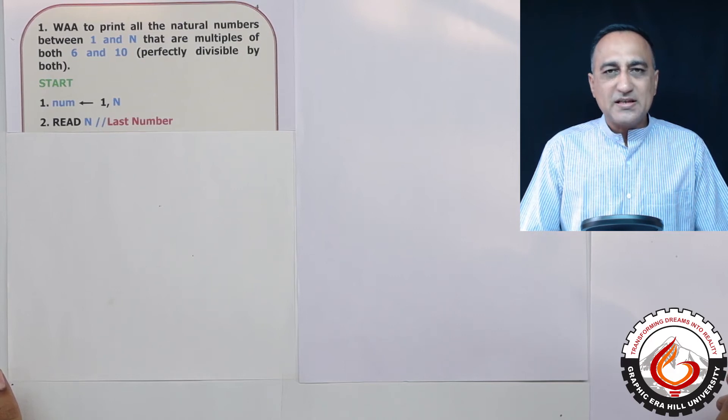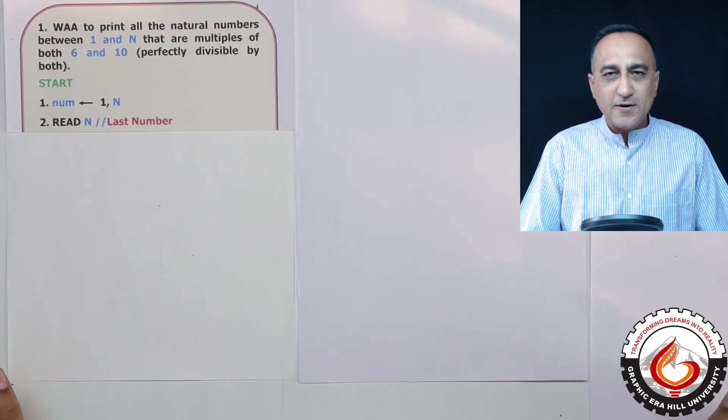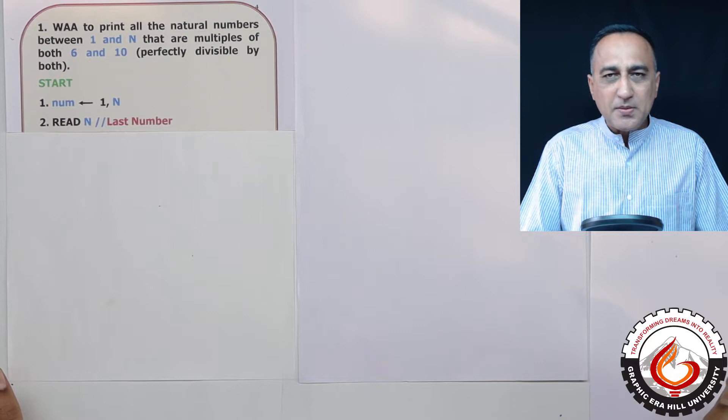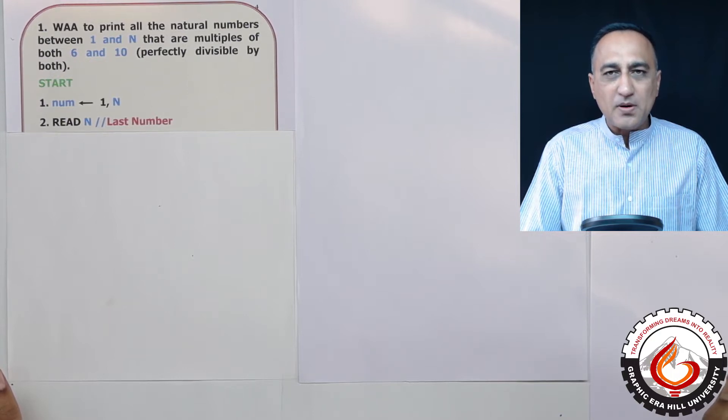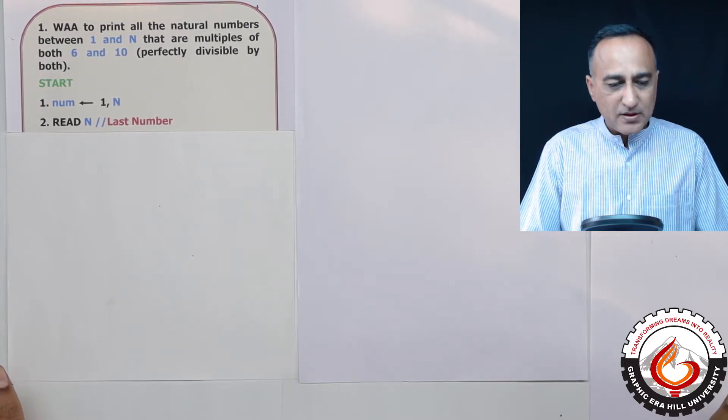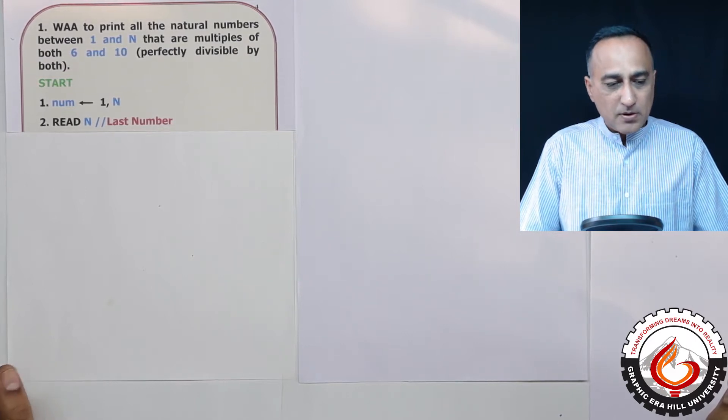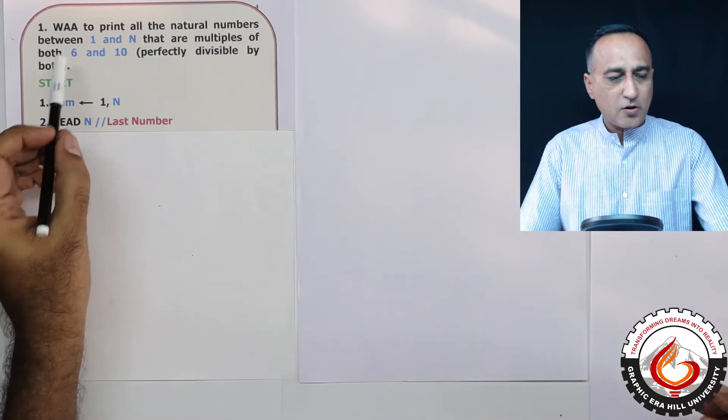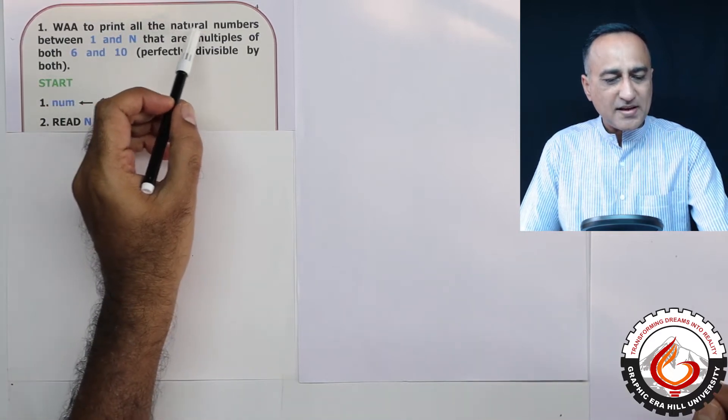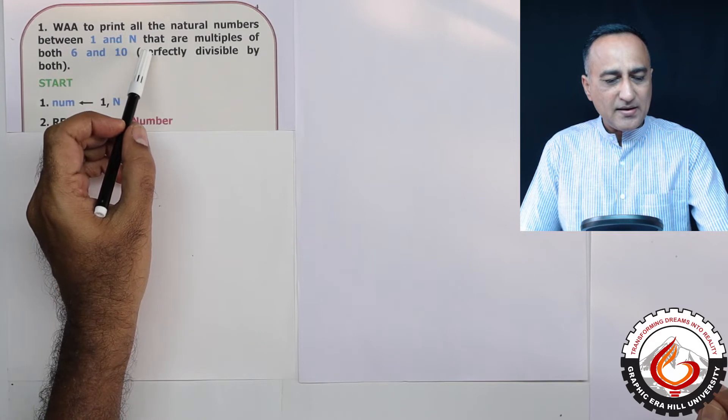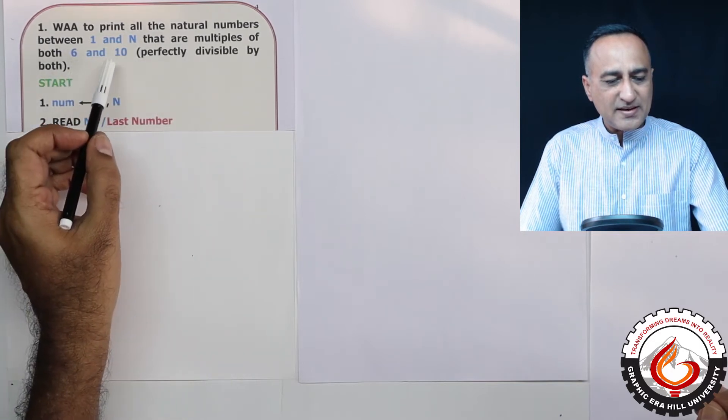I am now going to discuss the solution to the first looping problem given in round one. So let's try to understand what the problem is asking. The problem states: write an algorithm to print all the natural numbers between one and n that are multiples of both 6 and 10.